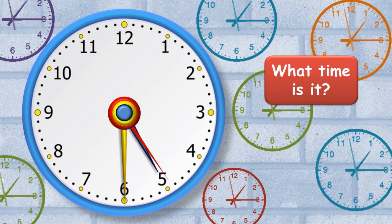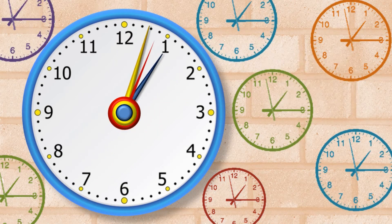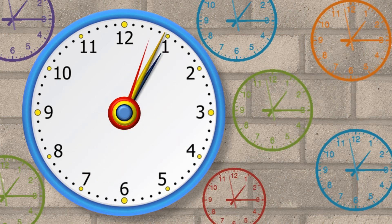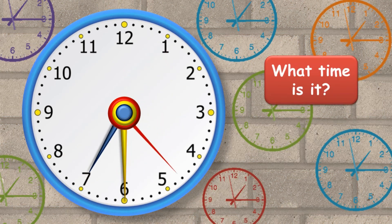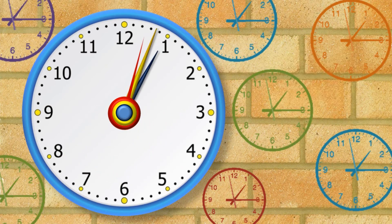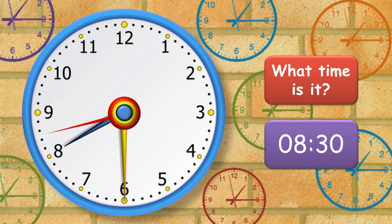What time is it? It's 5:30. What time is it? It's 6:30. What time is it? It's 7:30. What time is it? It's 8:30.